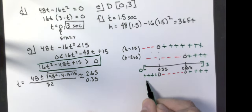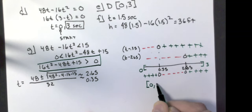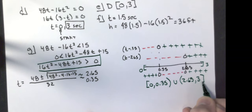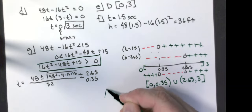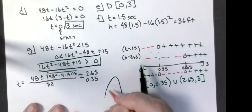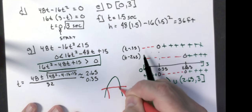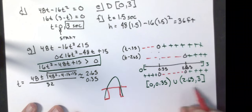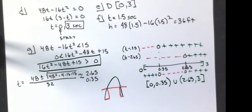So my intervals are from 0 to 0.35, round bracket there, union with 2.65 to 3. Now let's look at the original question. When is the height smaller than 15 feet? Upside down parabola. You're going to have from where it starts to the 15 feet. And from the 15 feet until where it hits the ground, that makes sense. So very drawn out, but that's the type of problem that you need to be able to work your way through. So that was problem one, 14 minutes.